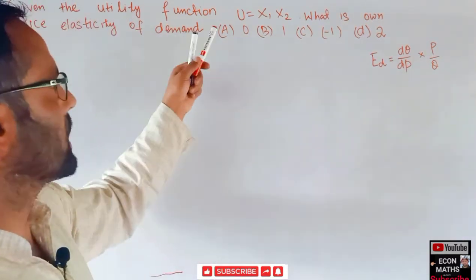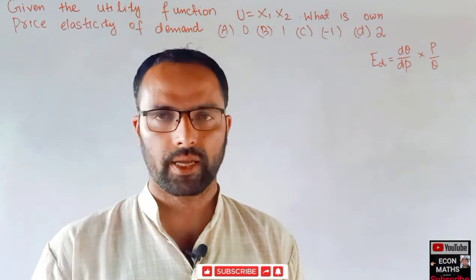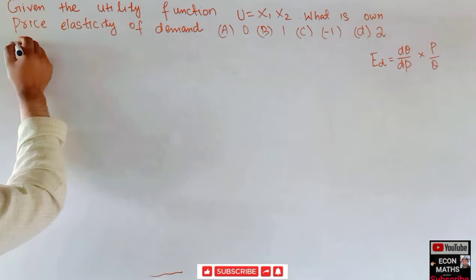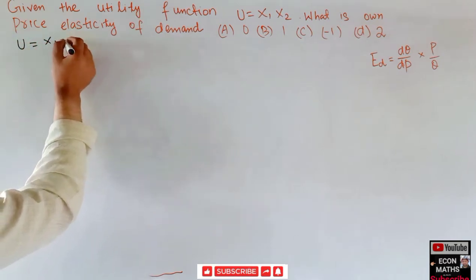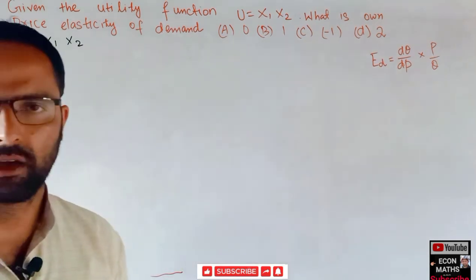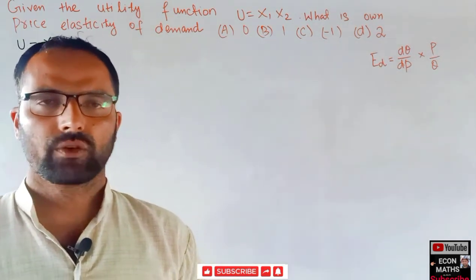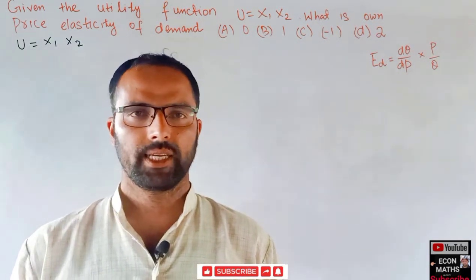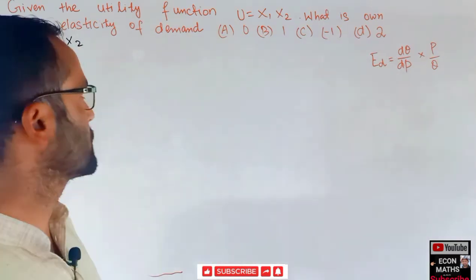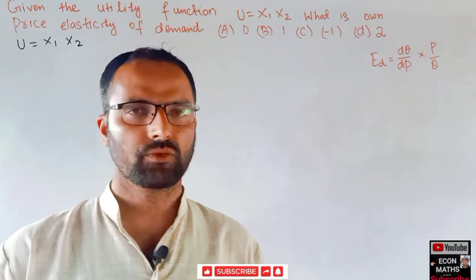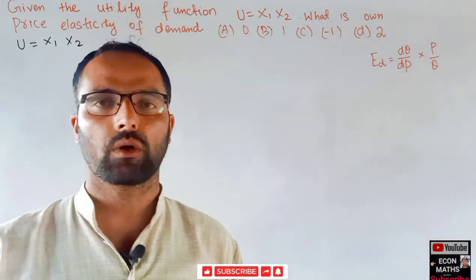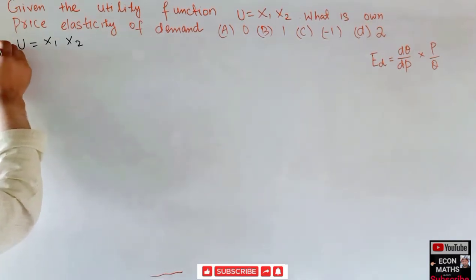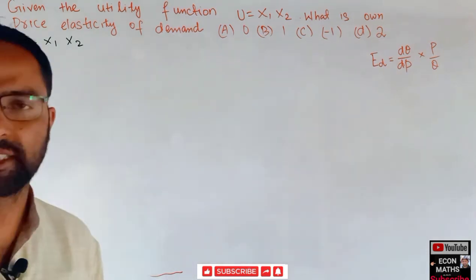We are being given only a utility function, from which we cannot directly derive the price elasticity of demand. So first, we note that our utility function is u = x1 times x2. What we have to do is first derive the demand function from this utility function. For that we need the price of good x1, price of good x2, and the money income. We want to maximize this utility subject to our budget constraint.